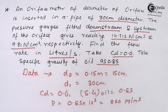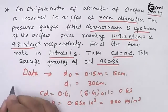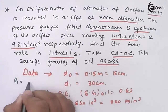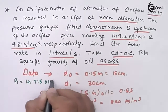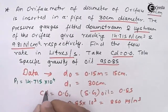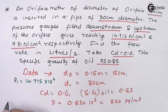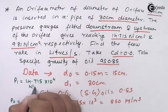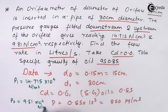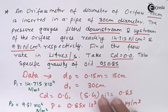The pressure values are: p1 is 14.715 × 10⁴ Newton per meter square and p2 is 9.81 × 10⁴ Newton per meter square. These two pressure values are given to us.